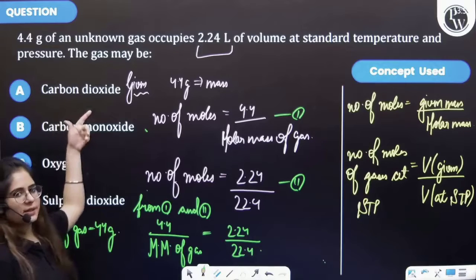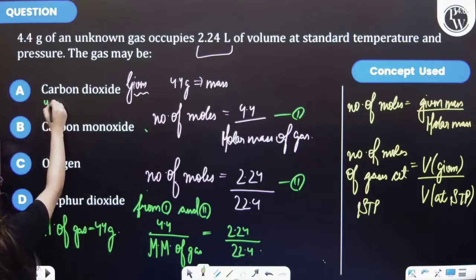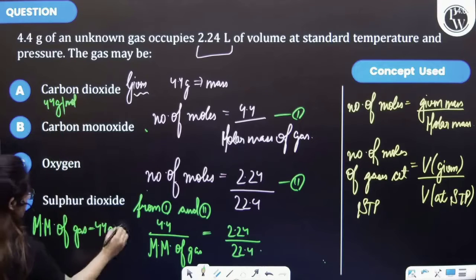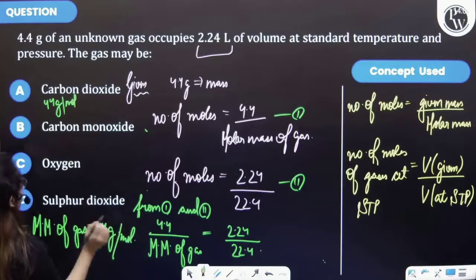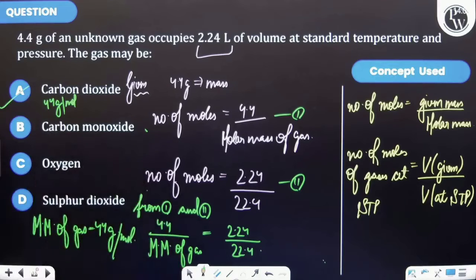Now let's check the options that is given to you. Firstly carbon dioxide, that means CO2, which is having 44 gram per mole to be molecular weight. And so the option A is your correct answer.